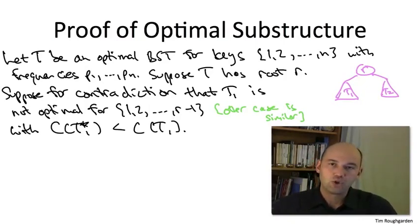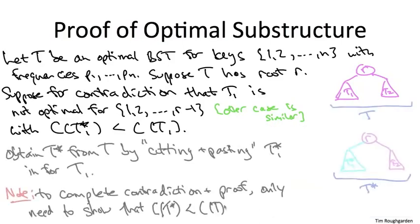So how do we get our superior search tree for all of the keys? Well, we're just going to take T and do cut and paste. We're going to do surgery on the tree T, ripping out its left subtree T1 and pasting in this subtree T star 1. Call the resulting tree T star.